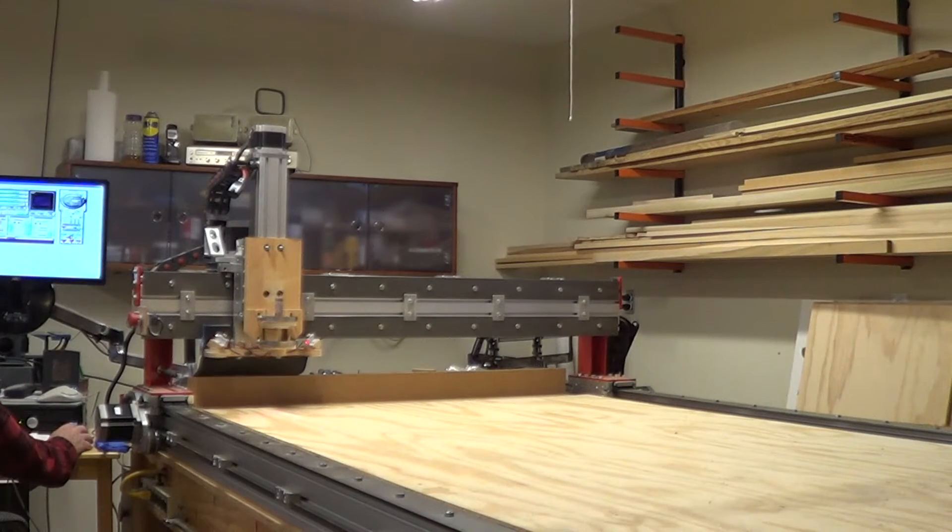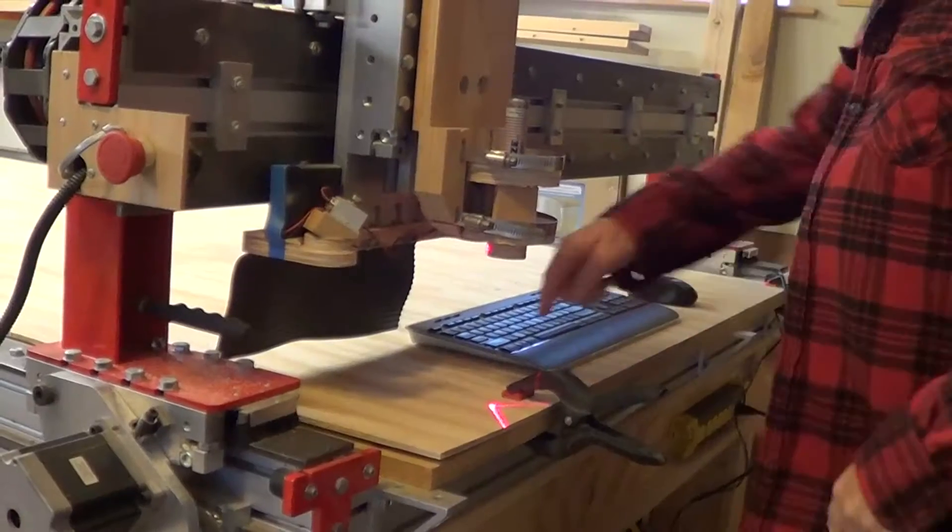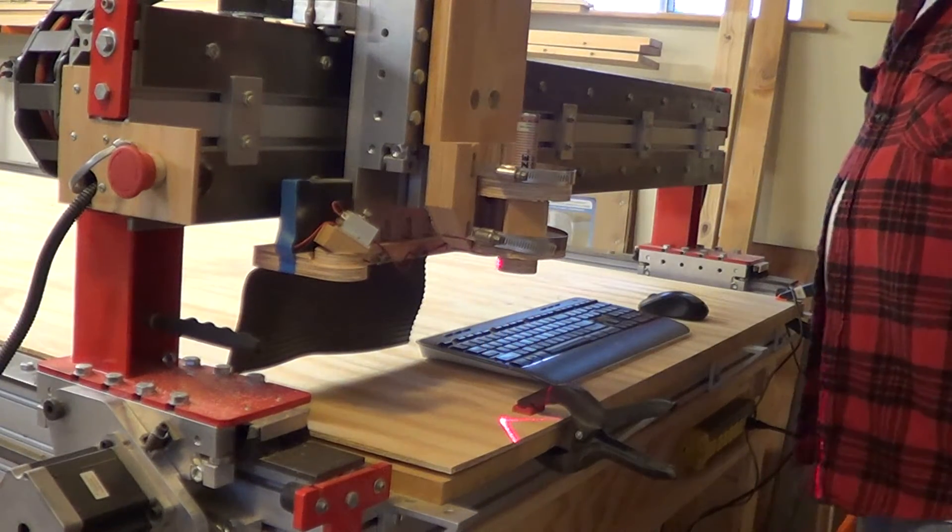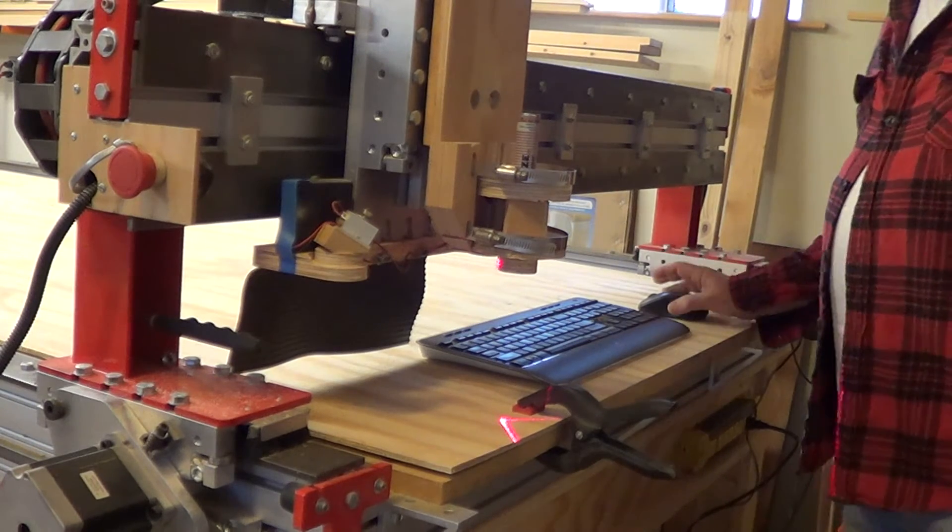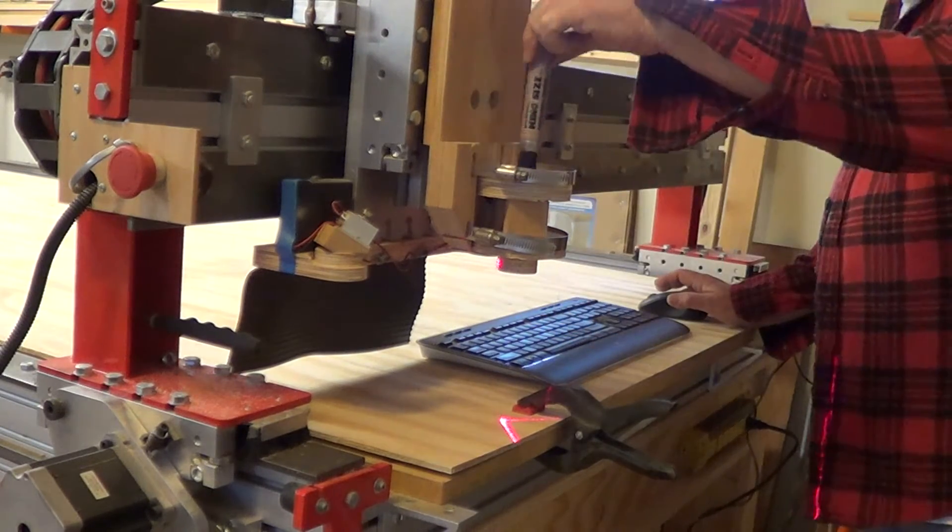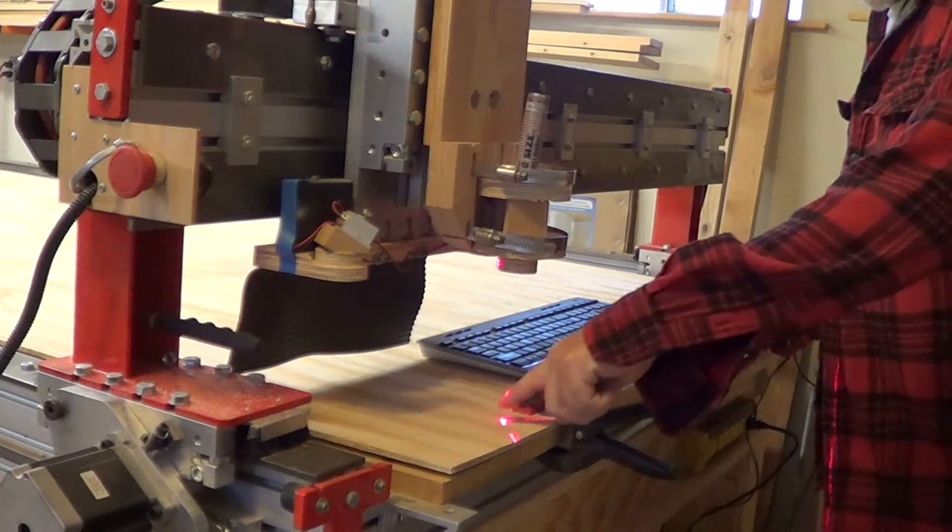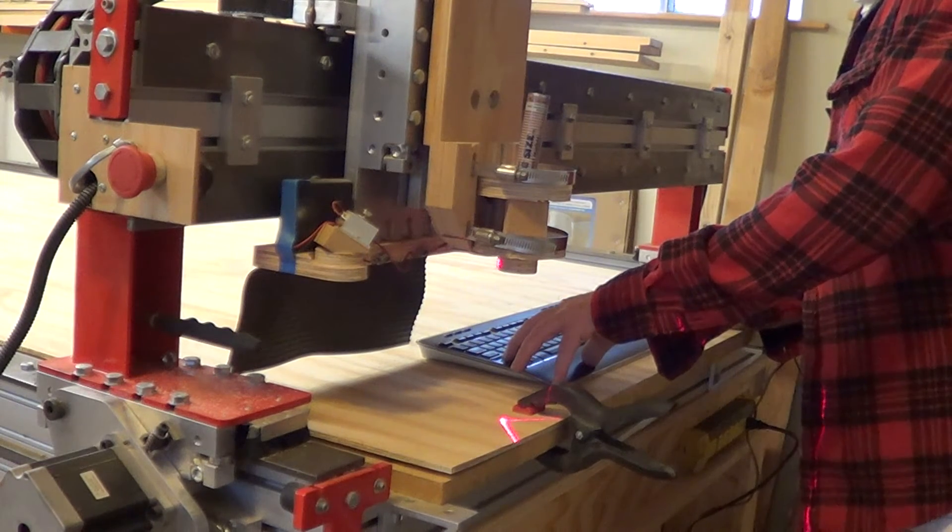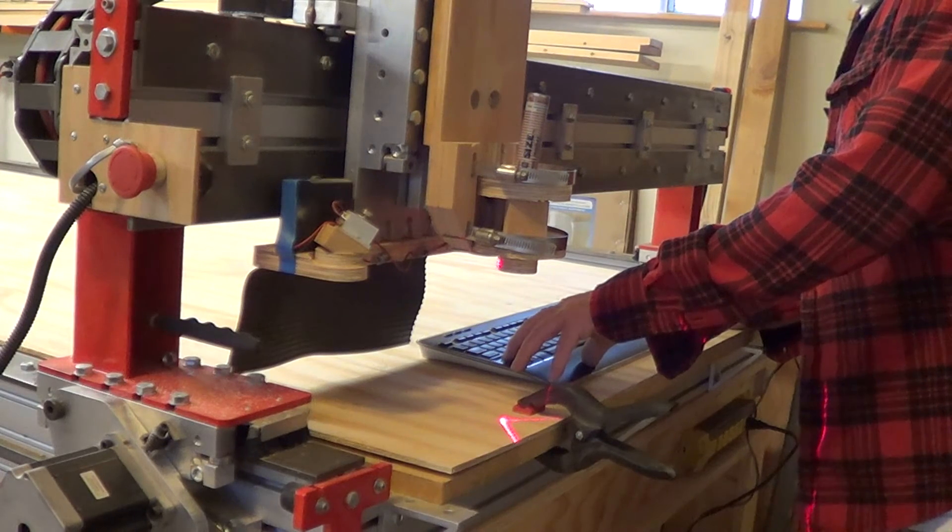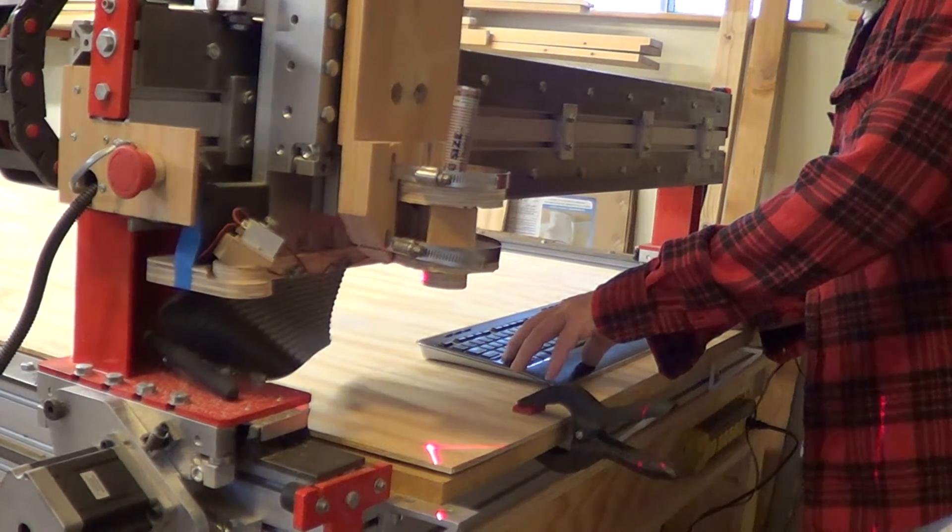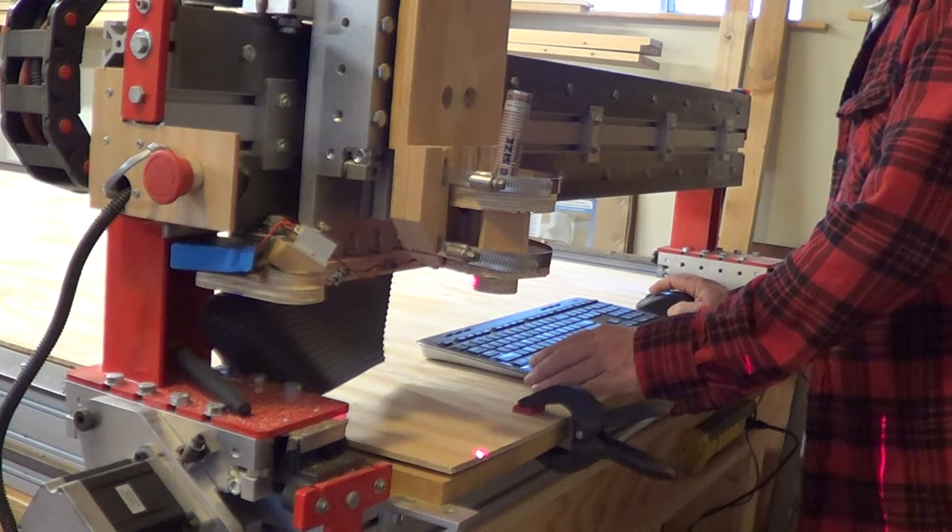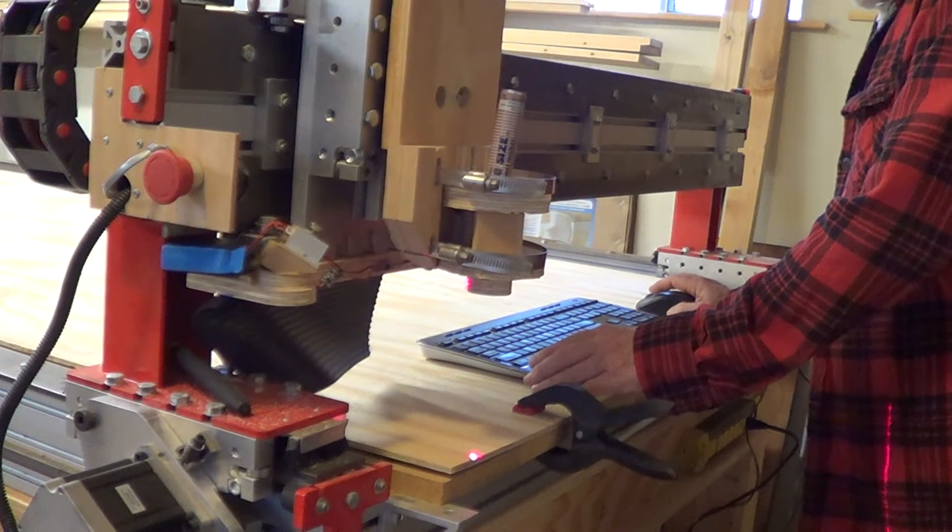The machine is quite quiet unless the router is running and then it gets noisy. There's my laser pointer that's pointing to where the router spindle or the magic marker is going to be. We want to get that right here on this corner. So we'll go this direction a bit. We're going to sneak up on my origin point here by going into incremental jog.